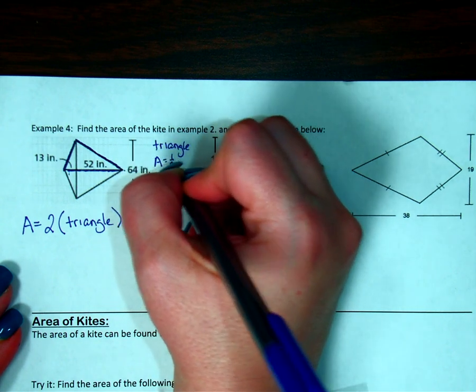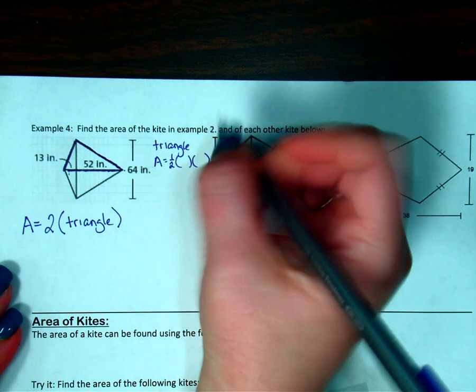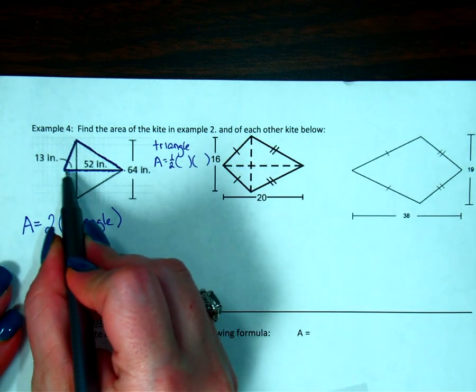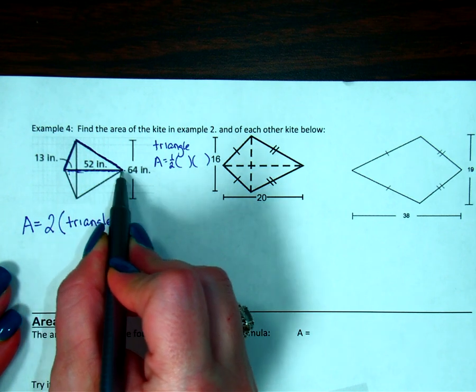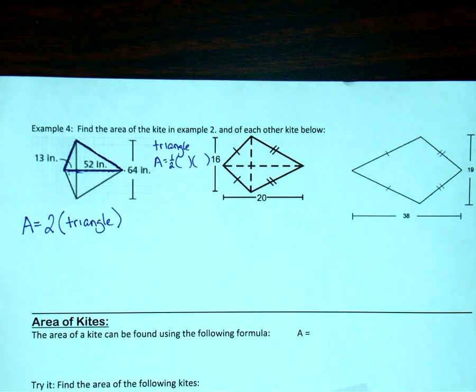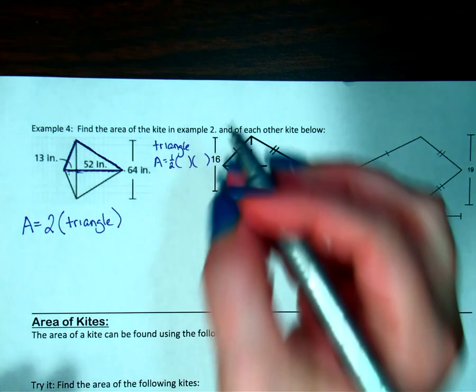The area for the top triangle is going to be one-half its base times its height. So let's look at how long that base is. It's going to be the 13 and the 52 together. So I'm going to do 13 plus 52. That base is 65.